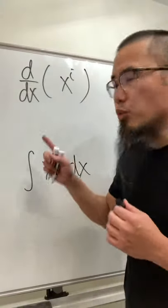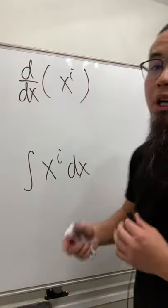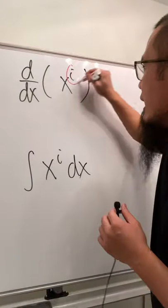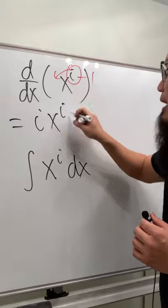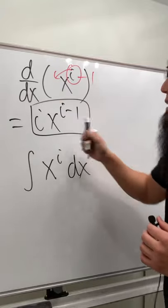This is the power of power rule, because when you want to differentiate x to the i's power, you can just use the power rule. Go ahead and bring this to the front and minus 1, and we'll just get i times x to the i minus 1 power. Do not put down the plus c, and this is it.